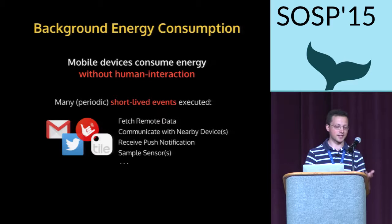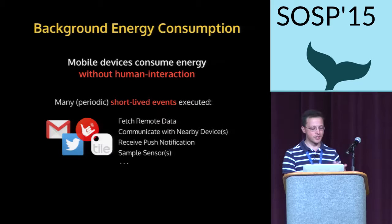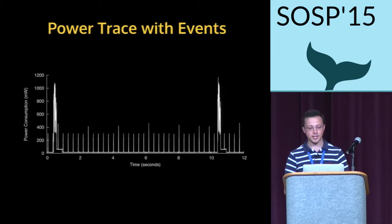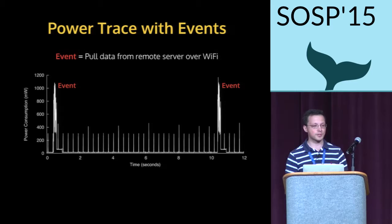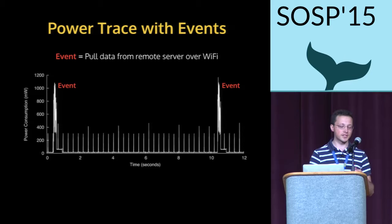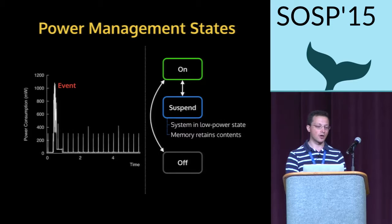To really understand the problem that Drowsy solves, we have to understand the landscape and what is actually going on in mobile devices today. I'm going to present a real power trace that we collected from the Nexus 4 device running Android. We have power consumption on the y-axis and time in seconds on the x-axis. We can see two large periods where there are peaks in power consumption. This corresponds to an event running — in this case, we're pulling some data from a remote server over Wi-Fi.